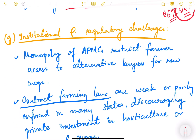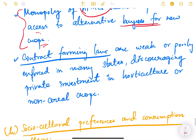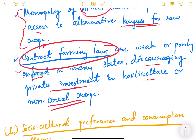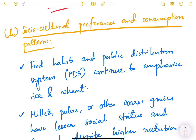Then there are institutional and regulatory challenges. Monopoly of APMCs — Agriculture Produce Marketing Committees — restricts farmers' access to alternative buyers for new crops. These are the institutional mechanisms through which farmers sell their produce to institutional or private buyers. Contract farming laws are weak and poorly enforced in many states, discouraging private investment in horticulture and non-cereal crops. Farm law amendment bills had addressed this issue, but unfortunately those bills got reversed and the debate continues. Hopefully in future these laws will be properly enacted.